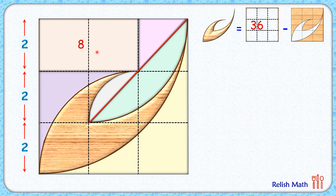This triangle has length and breadth of 2 centimeters each, so its area is half of base times height, which gives 2 centimeter square. Now to calculate the area of this yellow region, we consider the full square and subtract the area of the green quadrant.